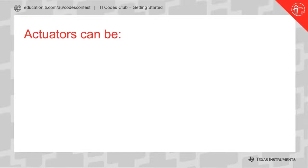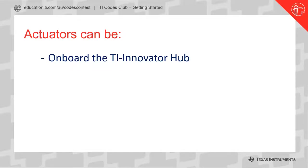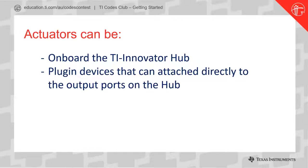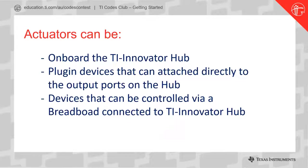Plugging in the actuators, I see as being in a range of ways. Firstly, there are some actuators that are directly on board the TI Innovator Hub — a couple of light-emitting diodes and a speaker for sound. Taking it further, there is a range of devices you can plug in directly into the output ports of the hub; the Grove mini-fan is one such example. Going even further, at the end of the hub there is a small breadboard to which you can plug in devices directly, or connect to a larger breadboard, further power supplies, and basically the sky is the limit.